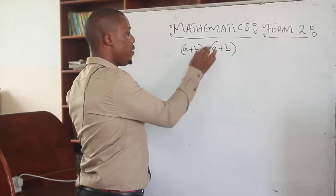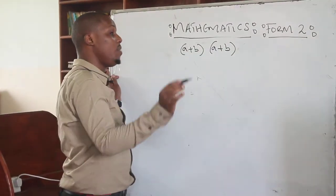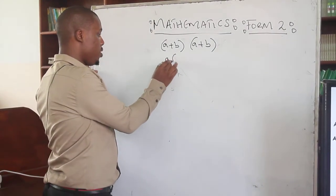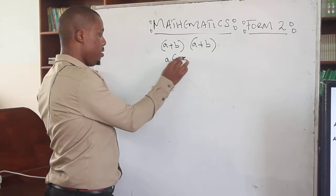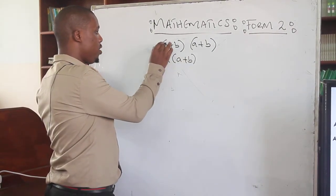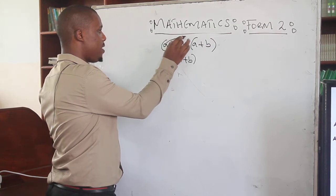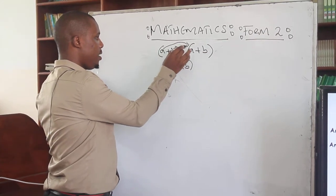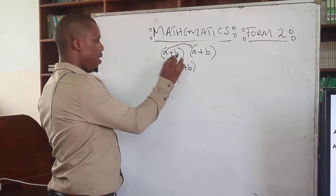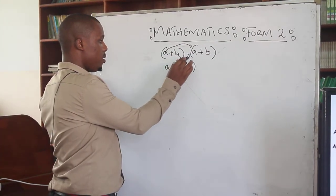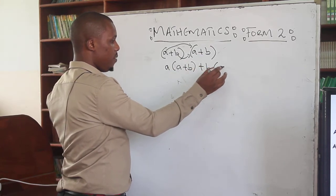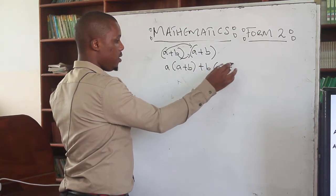This one, when you open the bracket, it means that you take your A here and multiply by A plus B. So this one, you multiply by the whole of that. And again, this B, you multiply by the whole of this. So it's going to be plus B, then multiplied by the whole of it.